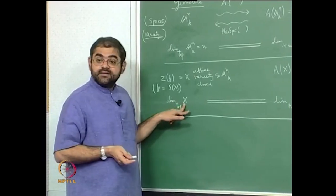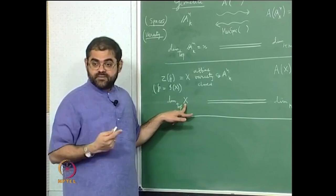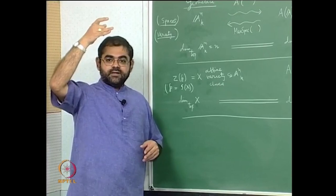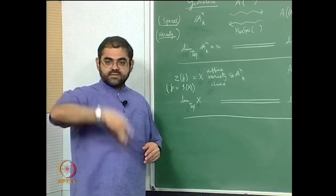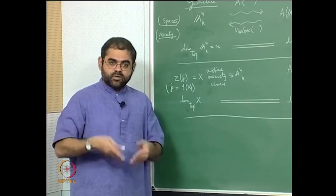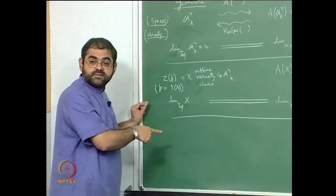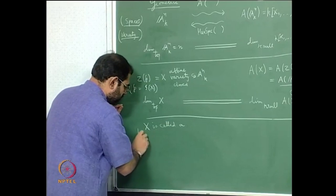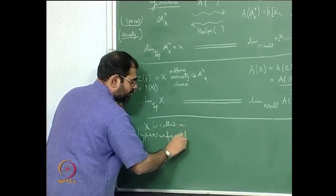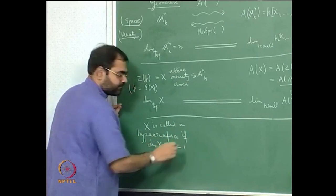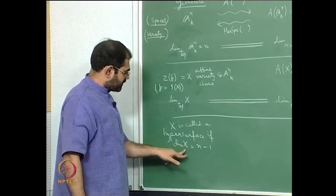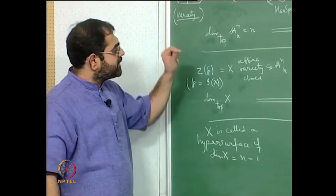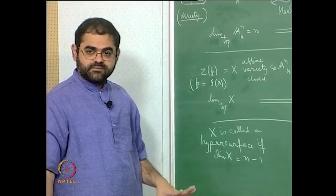A hypersurface is an X whose dimension is one less than the dimension of the ambient space, i.e., it has codimension one. The codimension of a subspace in a bigger topological space is the dimension of the bigger space minus the dimension of the smaller space. So X is called a hypersurface if dim(X) = n − 1. Whenever I write dimension of X, I always mean topological dimension.